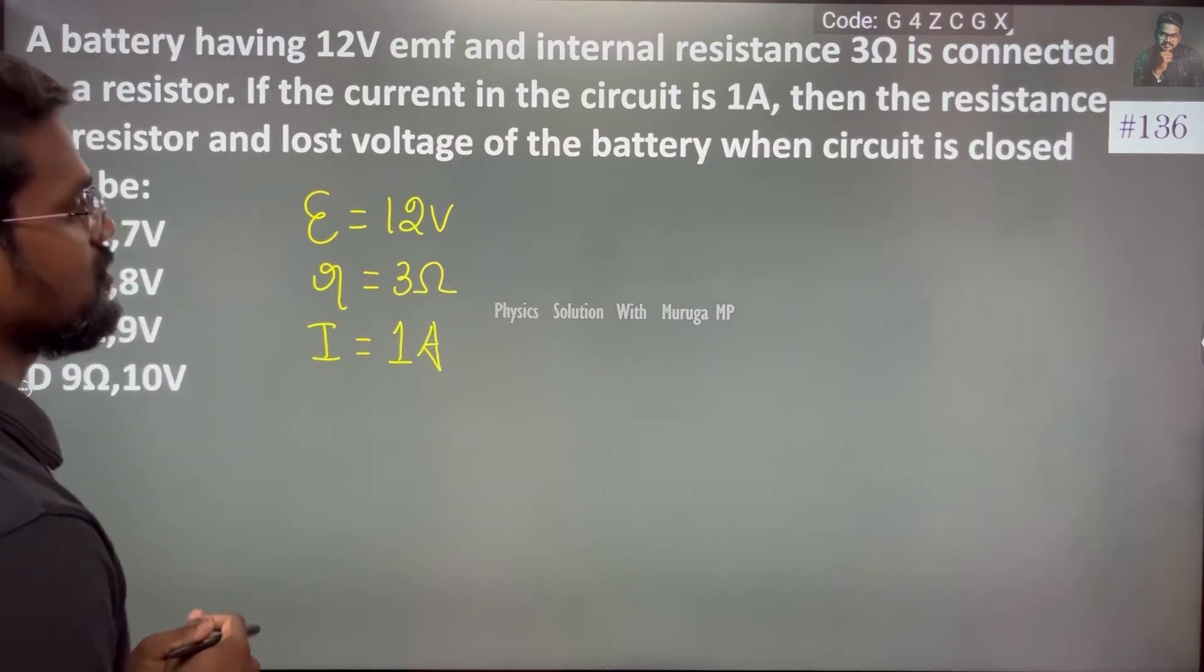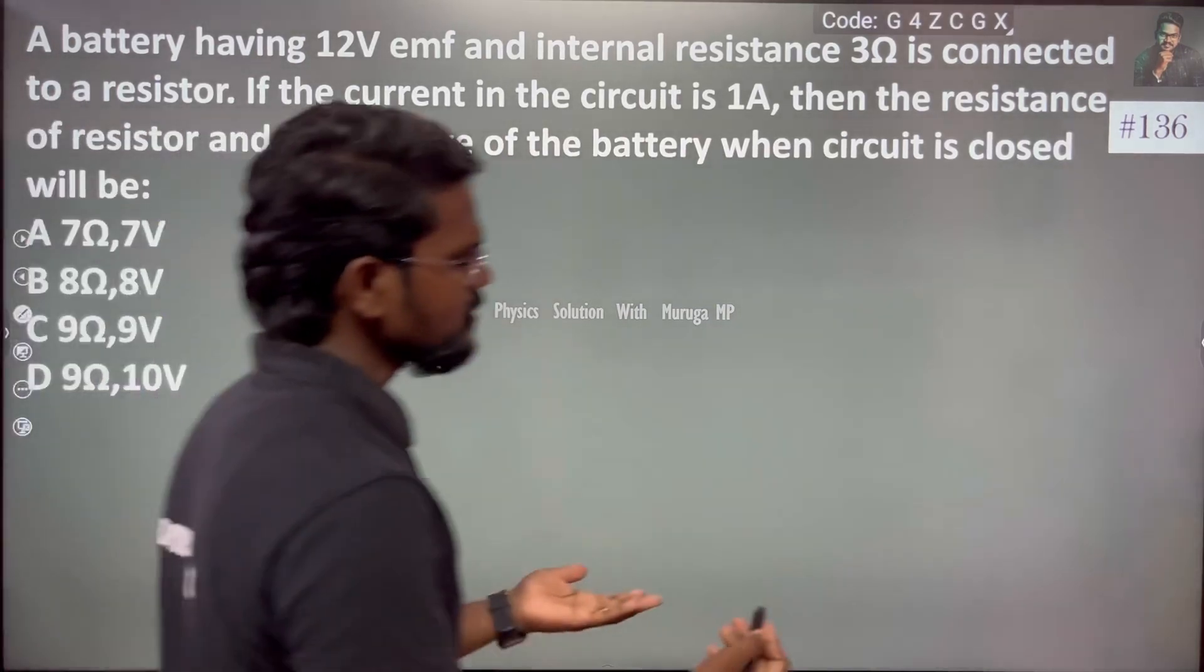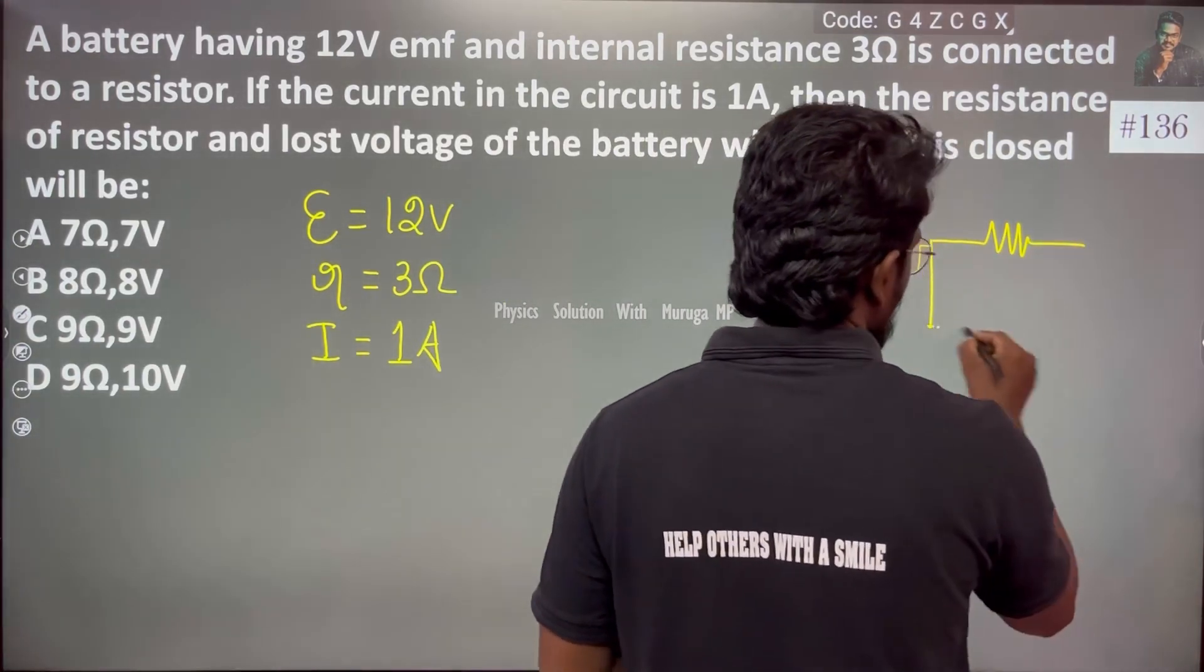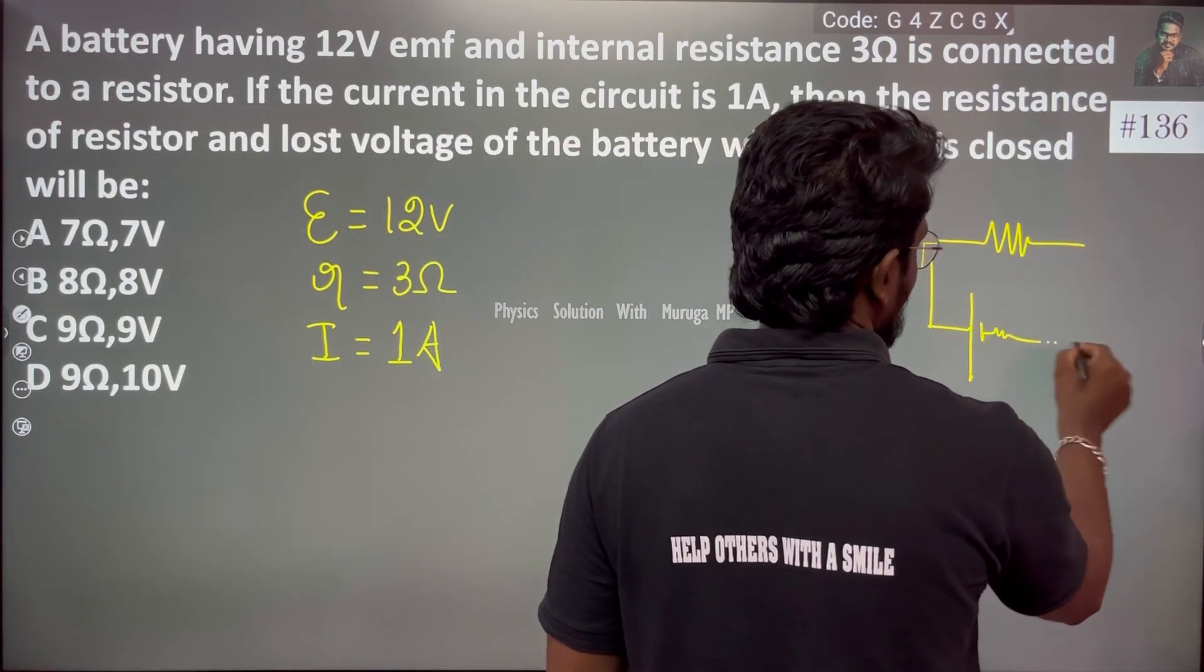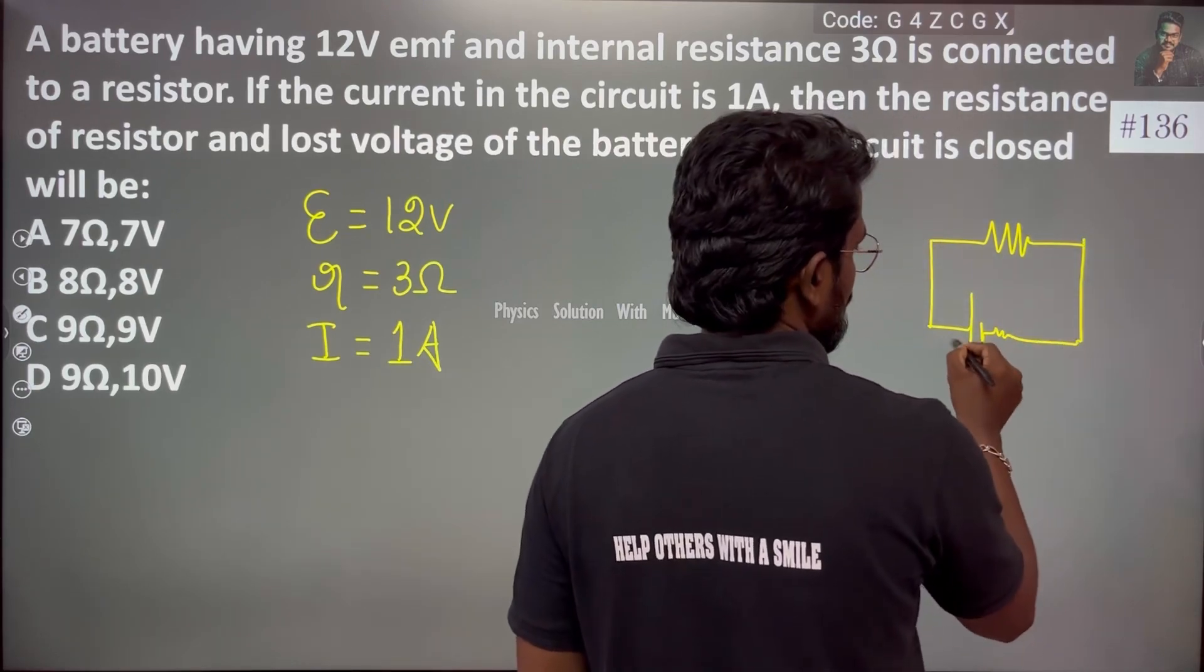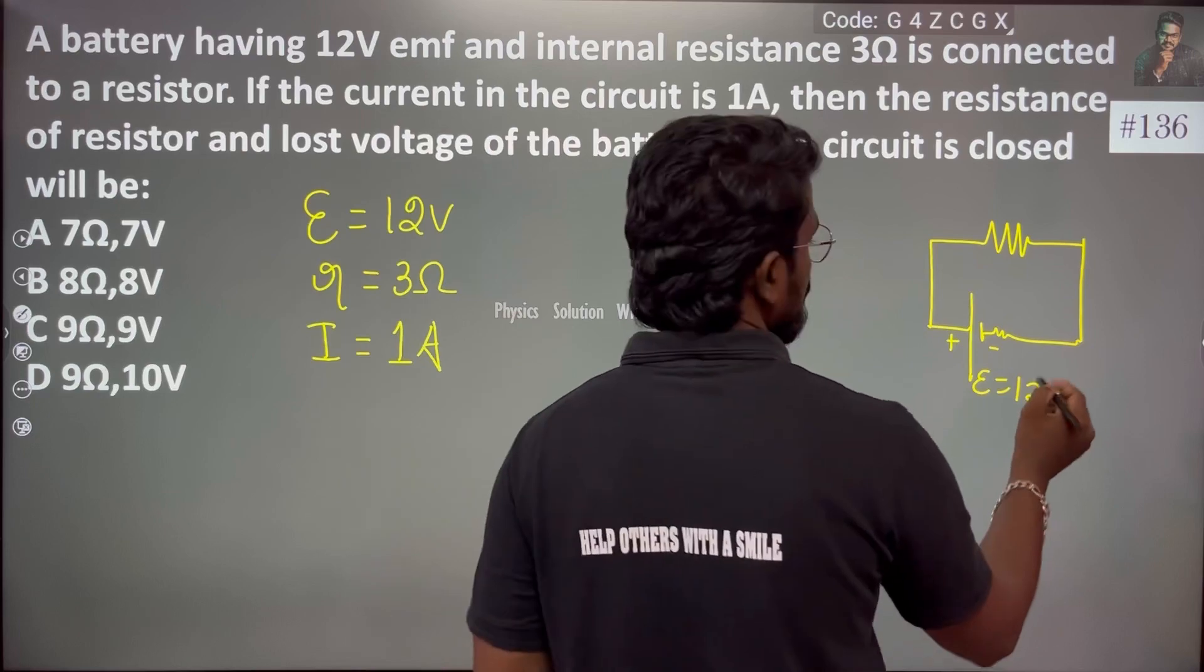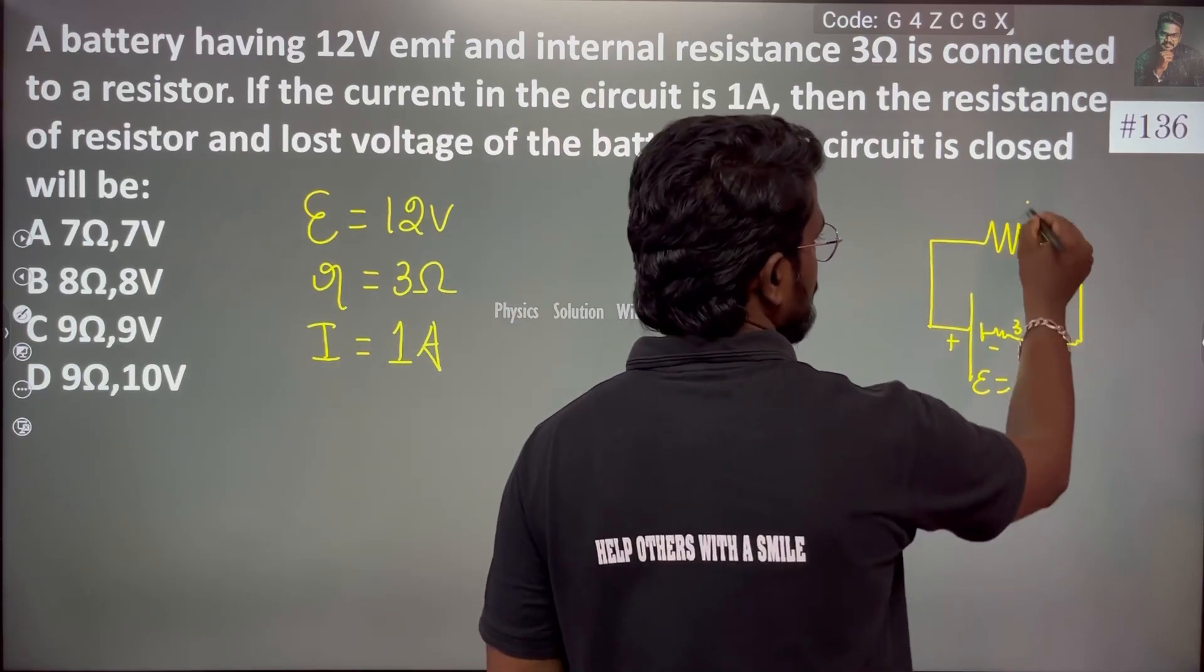This is simple. This is the circuit. There is a load, there is a battery with internal resistance. So, EMF is 12 volt. The internal resistance is 3 ohm. This is R, the load.